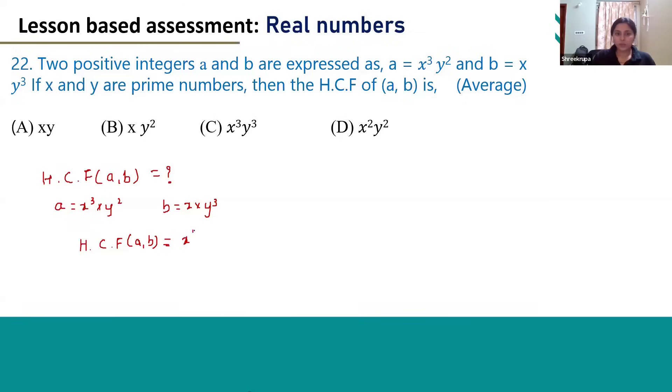So we have to take x¹. And y² and y³ are given, so y² is the least among these two. That is why we have to take y².